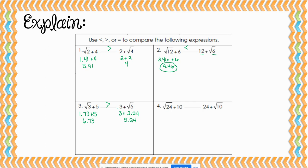For the square root of 24 plus 10, we start with the square root of 24, which is approximately 4.9, plus 10, giving us 14.9. We would compare that with 24 plus the square root of 10, but we know we're starting with 24, which is already greater than 14.9. So the square root of 24 plus 10 is less than 24 plus the square root of 10.